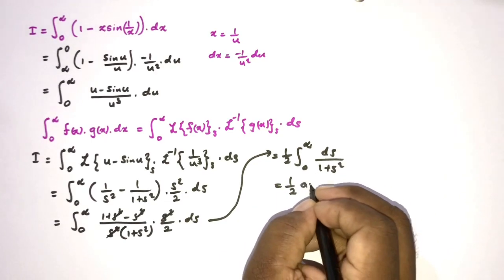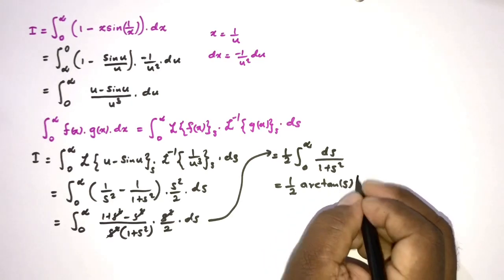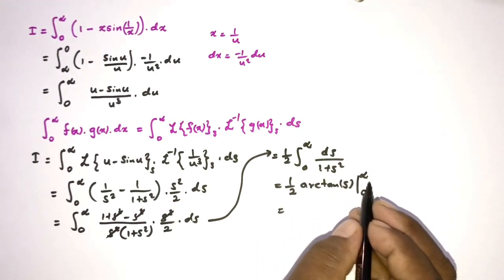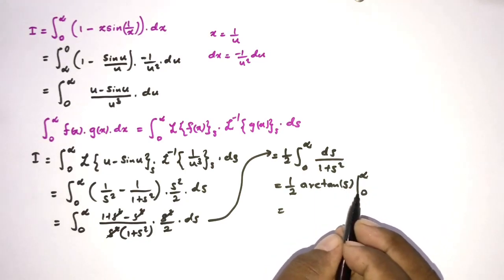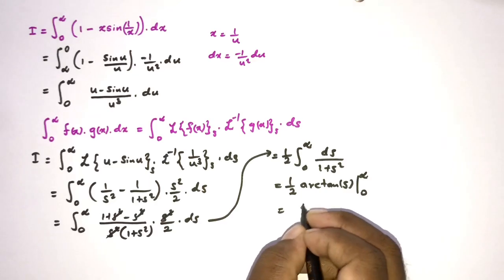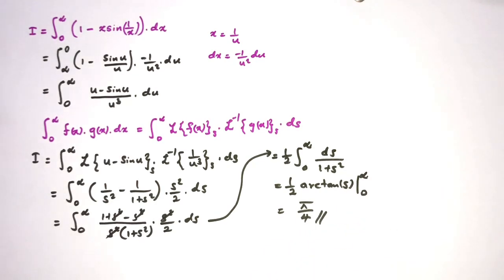We know the integral of ds over (1 plus s squared) is arctan of s. Evaluating from 0 to infinity: arctan of infinity is pi over 2, and arctan of 0 is 0. Multiplying by one half gives pi over 4. That is the answer for this integral. If you like this type of integrals and more advanced calculus, please subscribe to the channel. Thank you for watching.